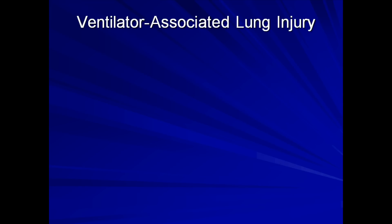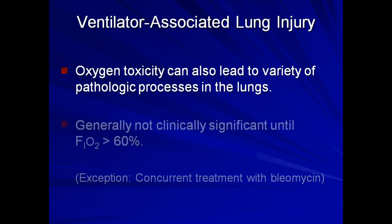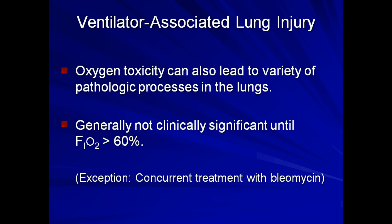A somewhat distinct form of ventilator-associated lung injury is oxygen toxicity. This is when excessive levels of oxygen can lead to a variety of pathologic processes in the lungs. However, these are generally not clinically significant until the fraction of inspired oxygen exceeds 60%, which is rarely necessary. The one notable exception is in patients who are concurrently treated with the chemotherapeutic bleomycin, used in the treatment of cancers such as Hodgkin's lymphoma. Pulmonary oxygen toxicity may develop at much lower levels of oxygen in this circumstance.